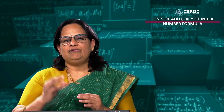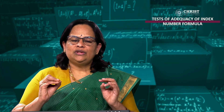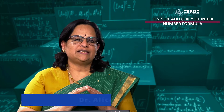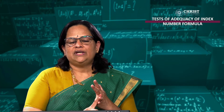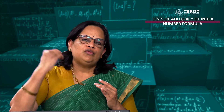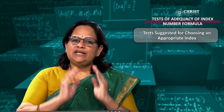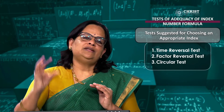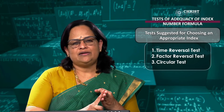Dear students, in this module we will see the tests of adequacy of index number formulas. We know that Fisher's ideal index — that formula itself we are calling it as Fisher's ideal index — because it is satisfying the time reversal test and factor reversal test. That is why it is known as the ideal index number formula. Three tests are suggested by statisticians: time reversal test, factor reversal test, and circular test.